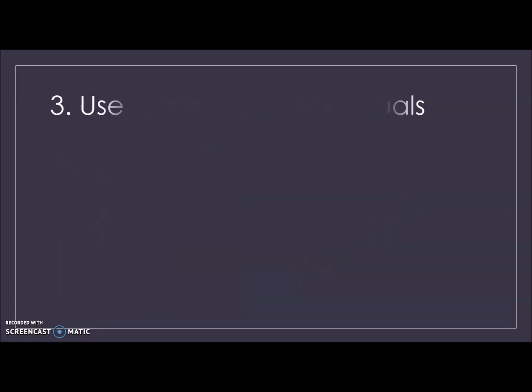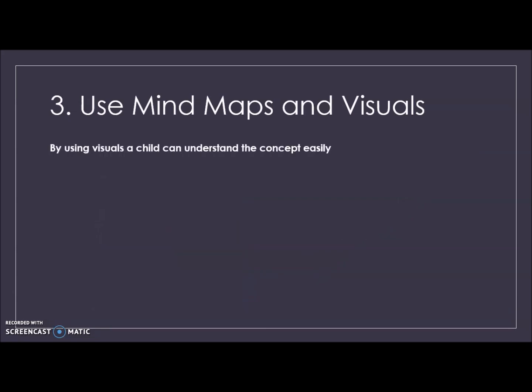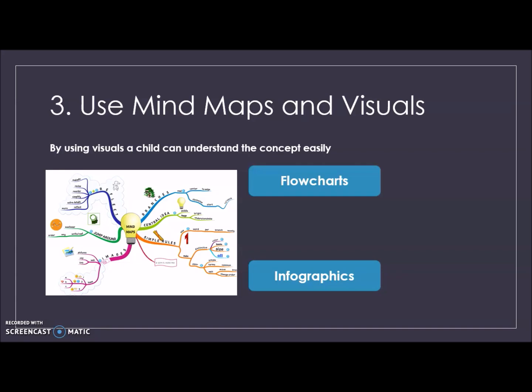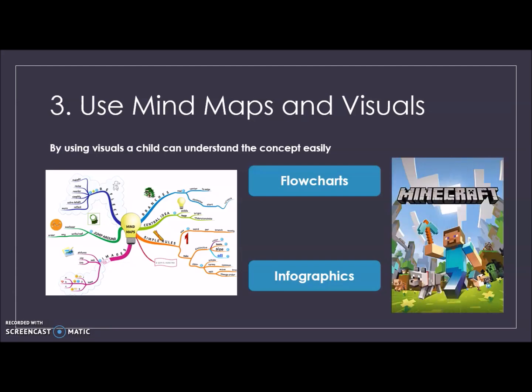Now comes the third main point — using mind maps and visuals, which can help a child to understand the concept easily. The first kind of mind map is a flowchart, which is used to break down the flow and helps you to learn the concept easily. Then there are infographics, which is one of the best ways to represent your data in the form of diagrams, helping you to learn the concept quickly and clearly. And Minecraft, which is my favorite, encourages any student to read and visualize their imagination. It enhances creativity and critical thinking and helps you to become a problem solver.